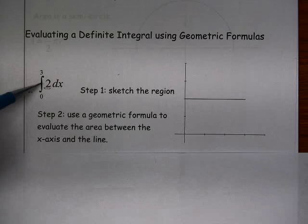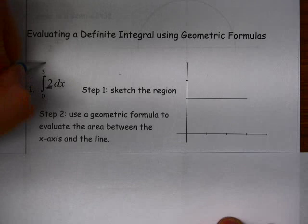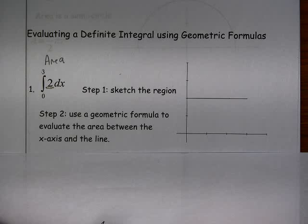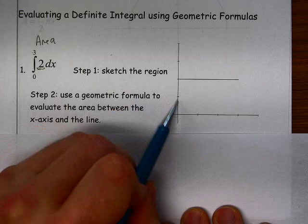So we haven't really talked about how we might analytically do this, so algebraically how we might do this. But we know that this definite integral actually represents the area between x equals 0 and x equals 3 that lies underneath the function y equals 2. So we can evaluate this definite integral because it's a fairly simple function just by thinking of it as an area. So this is the area, and we're going to sketch the region.